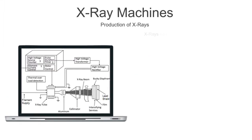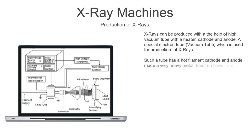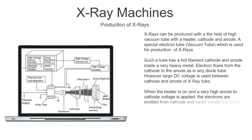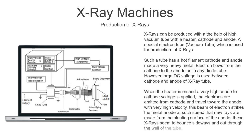So now let's talk about the production of X-rays. X-rays can be produced with the help of a high vacuum tube, a heater, cathode and anode. A special electron tube — that is, a vacuum tube — is used for the production of X-rays. Such a tube has a hot filament cathode and an anode made of very heavy metal. Electrons flow from the cathode to the anode as in any diode tube. However, a large DC voltage is used between cathode and anode. When the heater is on and a very high anode-to-cathode voltage is applied, electrons are emitted from the cathode and travel towards the anode with very high velocity. This beam of electrons strikes the metal anode at such speed that new rays are made from the slanting surface of the anode. These X-rays seem to bounce sideways and out throughout the wall of the tube.